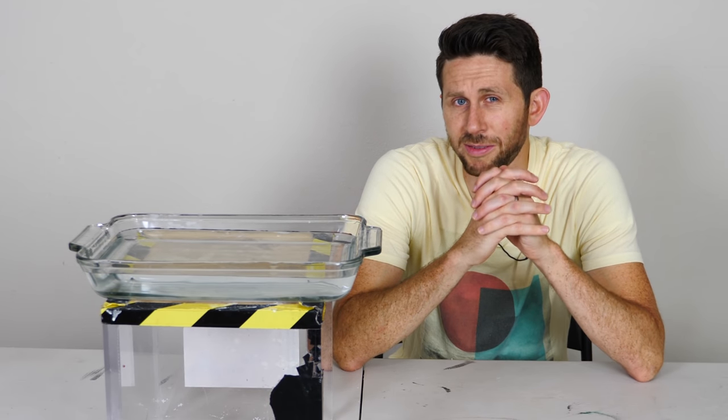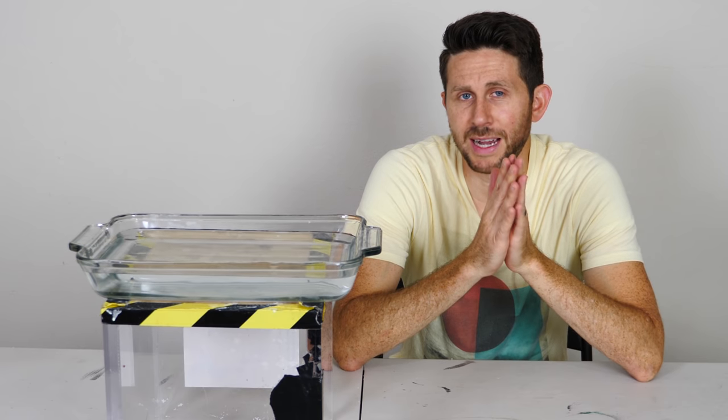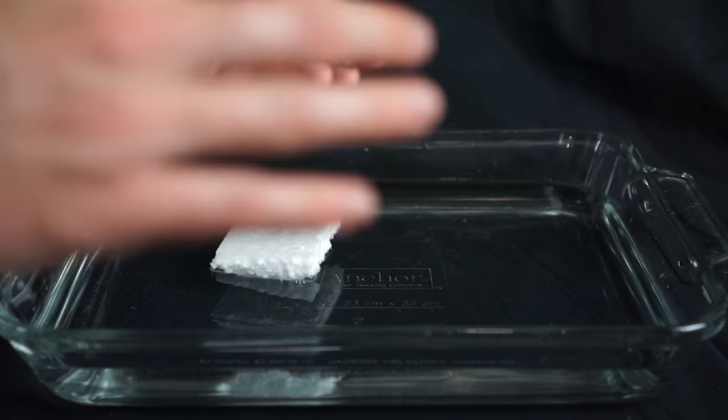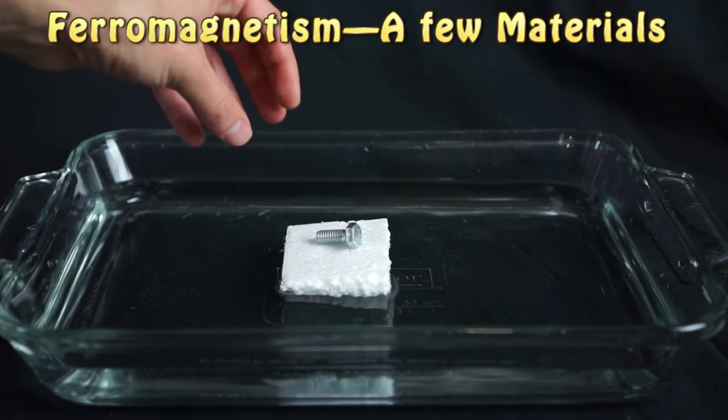Before I show you this, let's review what paramagnetism even means. So remember there's different types of magnetism. There's ferromagnetism which you're probably most familiar with. That's the case where iron sticks to a magnet because iron is strongly ferromagnetic.